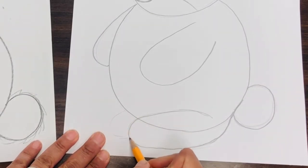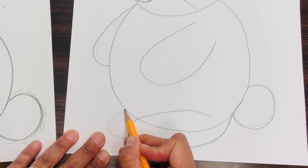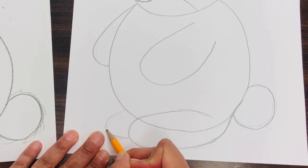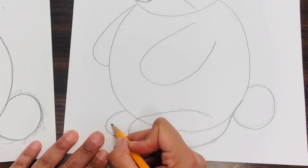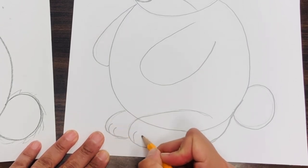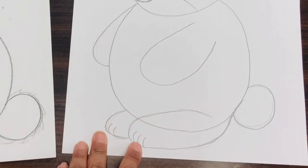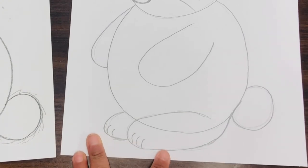And then we have the same shape for the back bottom paw or foot, if you want to call it foot. And then you can do just a few lines where the little nails would go.